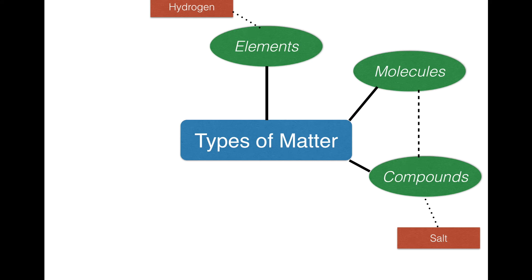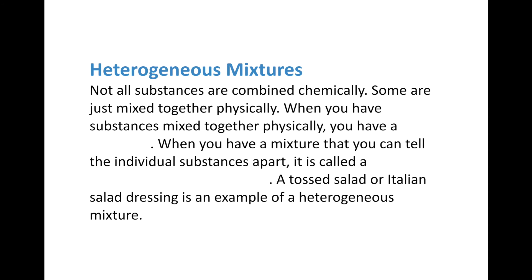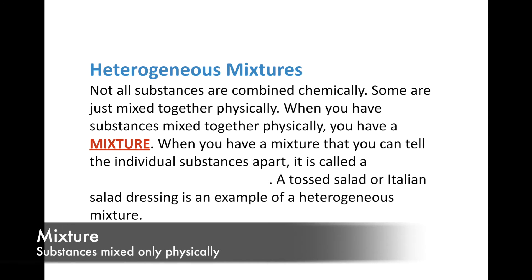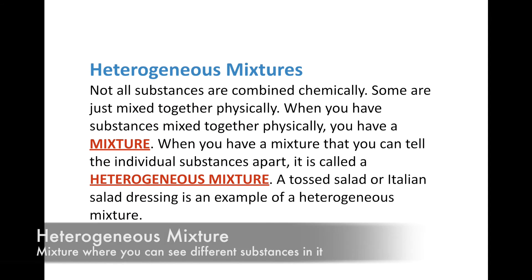So that's what happens when we bond atoms together chemically. But what happens if we're not bonding them chemically — we're just throwing them together physically? Well, when you just mix together substances physically, what you end up with is a mixture. When you have a mixture where you can tell the individual substances apart, it is called a heterogeneous mixture. Heterogeneous means different. A tossed salad or Italian salad dressing are examples of heterogeneous mixtures.